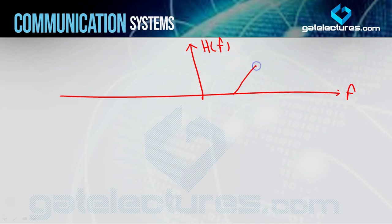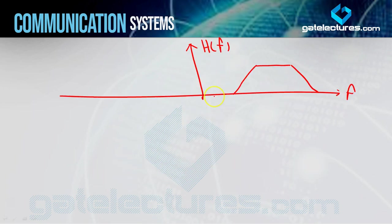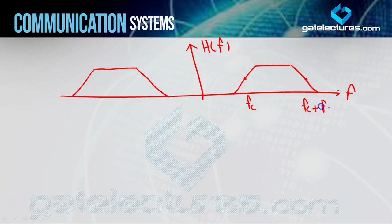Toh non-ideal filter kuch is tarah se banta hai aapka. Yahan par transitions hote hain from low to high. Woh directly jaise aapne ideal banaya tha - ideal mein woh directly low to high ho gaya, ek hi straight line mein - jabki actual mein woh low se dheere dheere karte ke high hota hai, aur high se dheere dheere karte ke low hota hai. Yeh hota hai aapka actual filter, practical filter. Agar main same negative side draw kar loon, toh kuch is tarah se hoga. Aur iske lagbhag center mein aapka jo FC hai, woh available hoga, aur yahan par bhi center mein FC plus FM available hogi. Toh is tarah ka aapka filter hota actual mein.